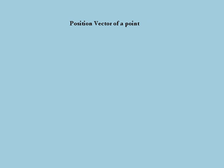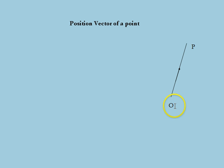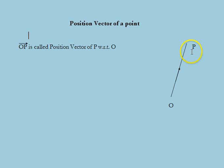Next we are going to discuss the position vector of a given point. Let us consider the vector OP, where the fixed point O is taken as the origin and point P is any point. Then vector OP is known as the position vector of the point P with respect to origin O. Point P is called the tip or end point of the position vector OP, and O is called the initial point.